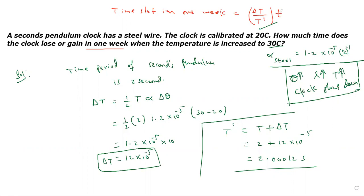So this T in terms of seconds, convert one week to seconds. Delta T is 12 times 10 to the power minus 5.